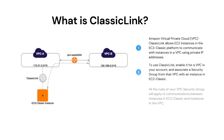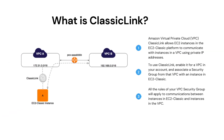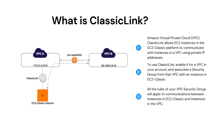Next question is: what is Classic Link? Classic Link allows you to link an EC2 Classic instance to a VPC in your account within the same region. This allows you to associate VPC security groups with the EC2 Classic instance, enabling communication between your EC2 Classic instance and instances in your VPC using private IPv4 addresses. Classic Link removes the need to use public IPv4 addresses or Elastic IP addresses to enable communication between instances.